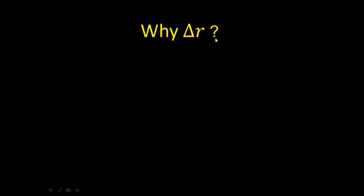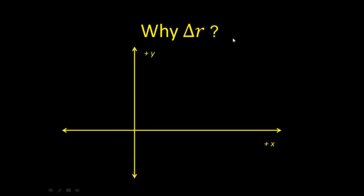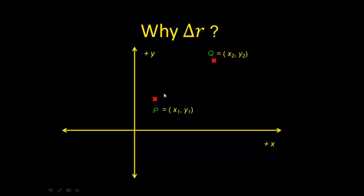This raises the question: why do we use delta r? In a Cartesian coordinate system, if you have a point P at (x₁, y₁) and a point Q at (x₂, y₂), notice in the Latin alphabet it goes n-o-p-q. The shortest distance between them is labeled r — and n-o-p-q-r follows in sequence. That's why we use delta r when talking about the displacement of an object in general.